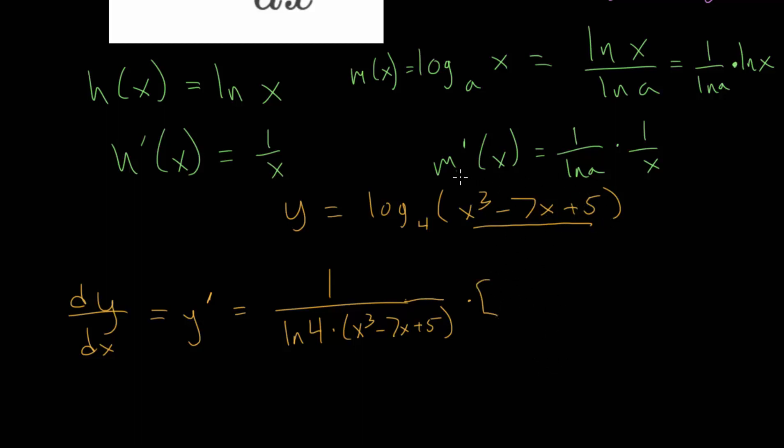And for this, we'll just use the power rule. Bring the 3 down in front. And then we can subtract 1 from the exponents. We have 3x squared.